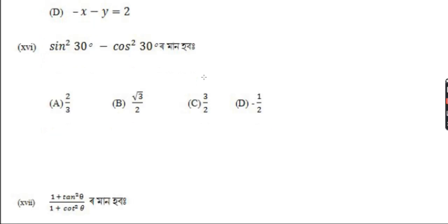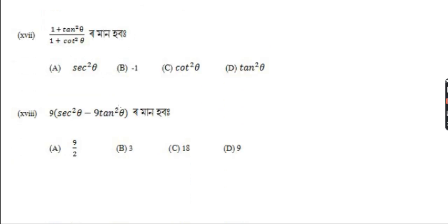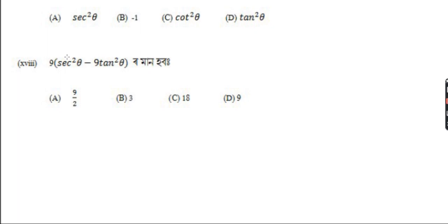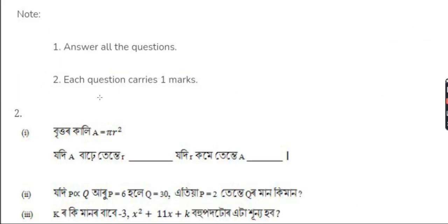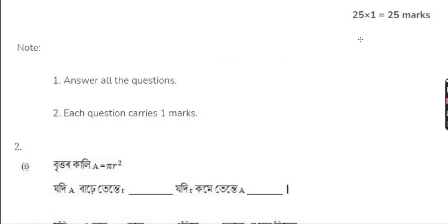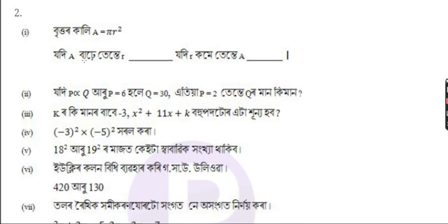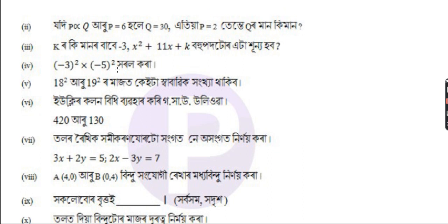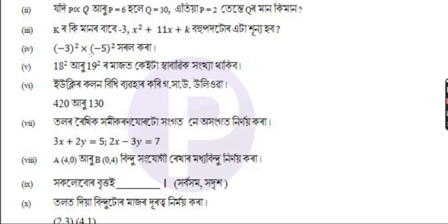Sin square 30 degree minus cos square 30 degree majo habo. Next: 1 plus tan square theta by 1 plus cos square theta majo habo. Next: 9 into 6 square theta minus 9 tan square theta majo habo. One marker posis tata question aashe. Jodi A barhe, tente R ki hobo; R jodi R kome, tente A ki hobo. Jodi A barhe, tete R kome, tente A barhi hobo. Jodi equation: kyaar ki majo habo? Minus 3? X square plus 11x plus kya bhoo habo. Minus 3 whole square into minus 5 whole square whole square. 18 square and 19 square majo bata ki?